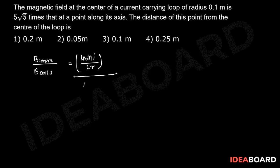That is equal to mu naught n i r square divided by 2 times r square plus x square to the power 3 by 2. So that comes out to be r square plus x square to the power 3 by 2 divided by r cube.